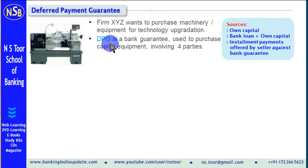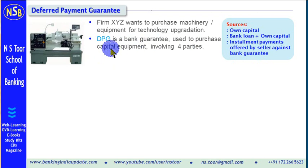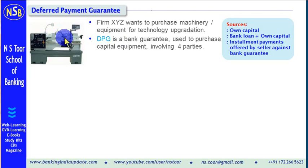Deferred Payment Guarantee is a bank guarantee and it is used to purchase capital equipment, like machinery, like equipment. So when these types of assets are to be purchased, one of the facilities which banks provide is called Deferred Payment Guarantee.